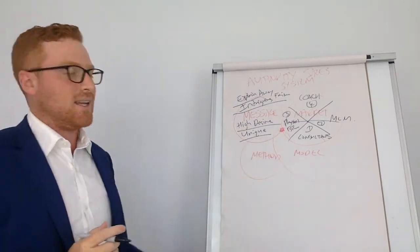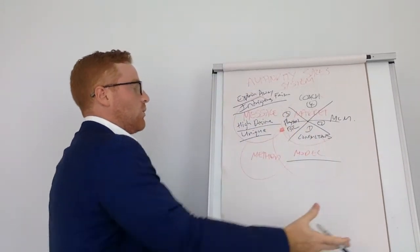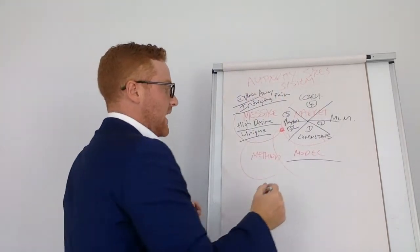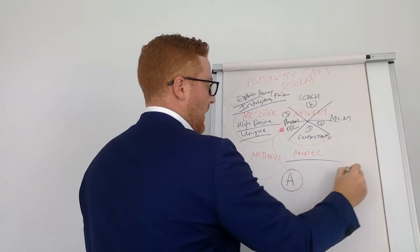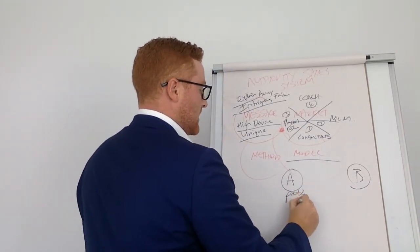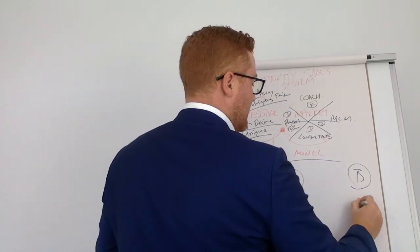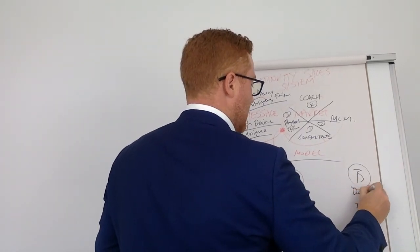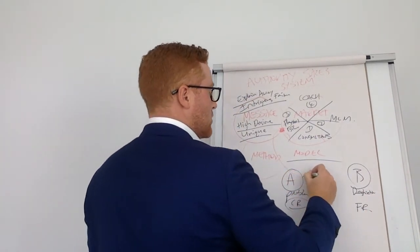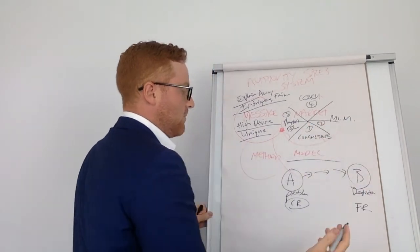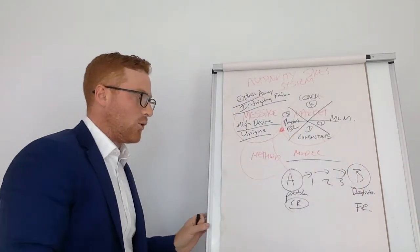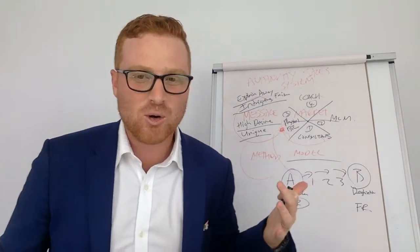The next thing, we've got message market. The next is the model. You must have a model. People need to understand that there is a place to get from A to B. So this is their problem. This is their current reality, and they need to get to their future reality, which is the destination. And so the problem is, they need to know the bridge.